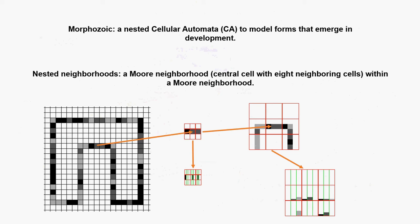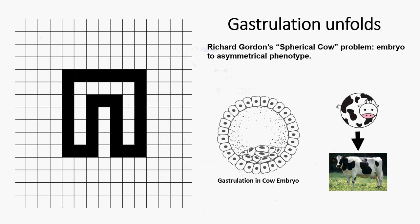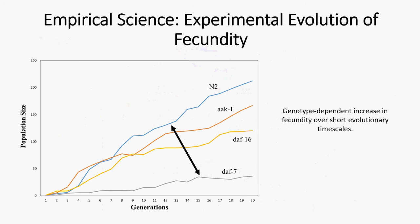We now switch gears to something that Tom Portegies will give a talk on in one of the tutorials, which is Morphozoic. This is a nested cellular automata which we can use to look at pattern formation in a developmental context. We have what we call nested neighborhoods — neighborhoods of different sizes nested in one another. You can download Morphozoic from GitHub and run something similar to Conway's Game of Life, where you look at interactions between cells and they produce patterns representing phenotypic forms. Simple rules get employed in the interactions between cells and their states, producing these shapes — for example, gastrulation. This relates to Richard Gordon's spherical cow problem: how do you get an asymmetric phenotype, like a cow, from basically a sphere, which is an embryo? We can use Morphozoic to verify some of those things.